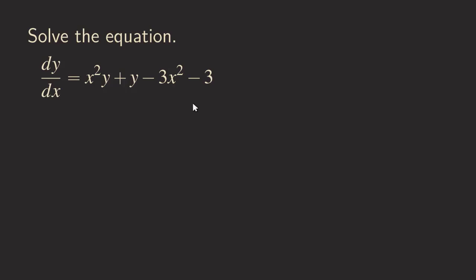As you can see here in this equation, it has four terms, so how do we make it in the form of a separable equation? We can actually try to factor this by grouping.